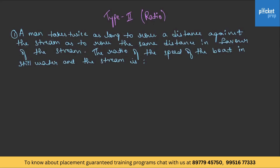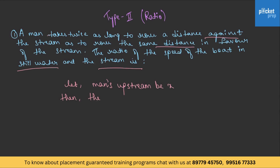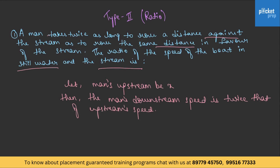Type 2 questions. A man takes twice as long to row a distance against the stream as to row the same distance in favor of the stream. What is the ratio of the speed of the boat in still water to the speed of the stream? The question is indirectly telling us that the man's downstream speed is twice his upstream speed.